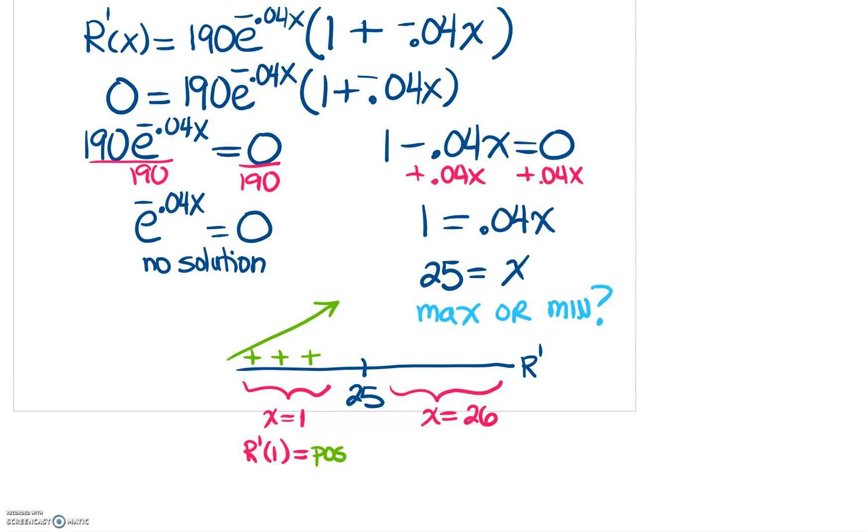Now, if we do the same kind of thing, take our 26 and plug it into our derivative. And again, we don't care what the number we get. We just want to know, do we get a positive or do we get a negative value? And carefully typing that in your calculator, you're going to see you get a negative value, which means if your derivative is negative, that your function is decreasing. So what this means is if your function is going up and then coming back down, that at 25, we have a maximum.